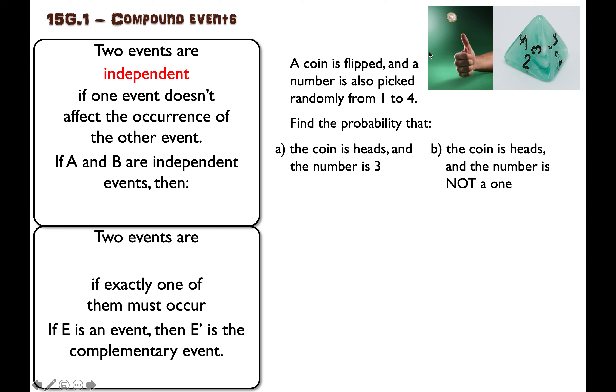For example, tossing a coin and rolling a die. If you get heads, that doesn't change the number that would be on the die. They're completely different.